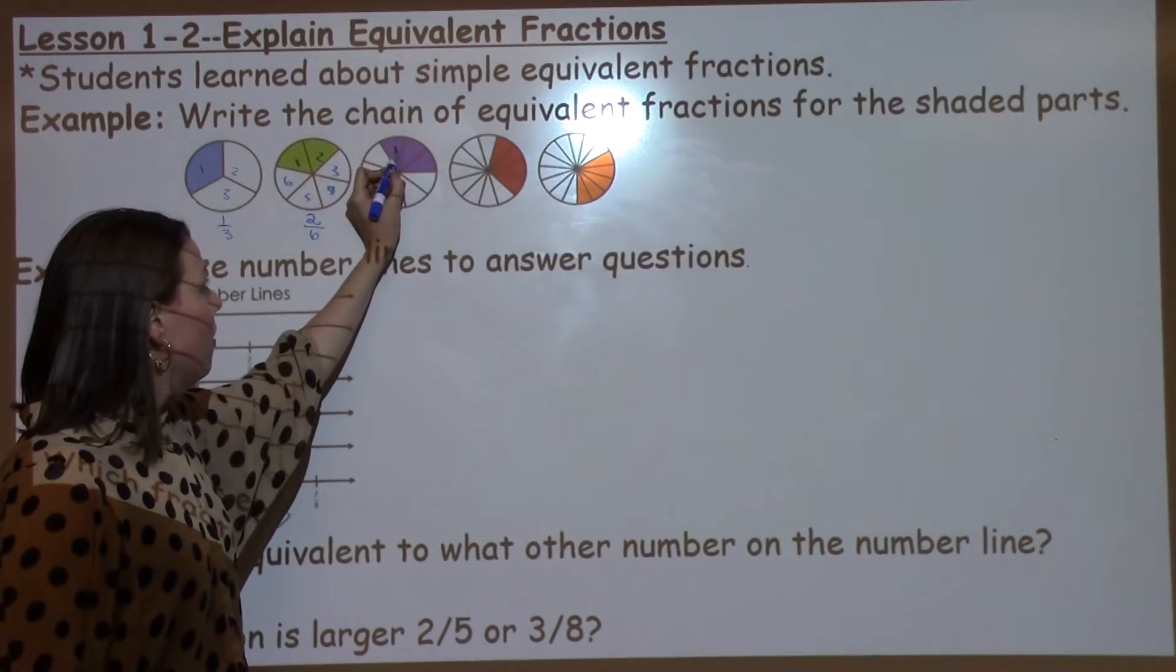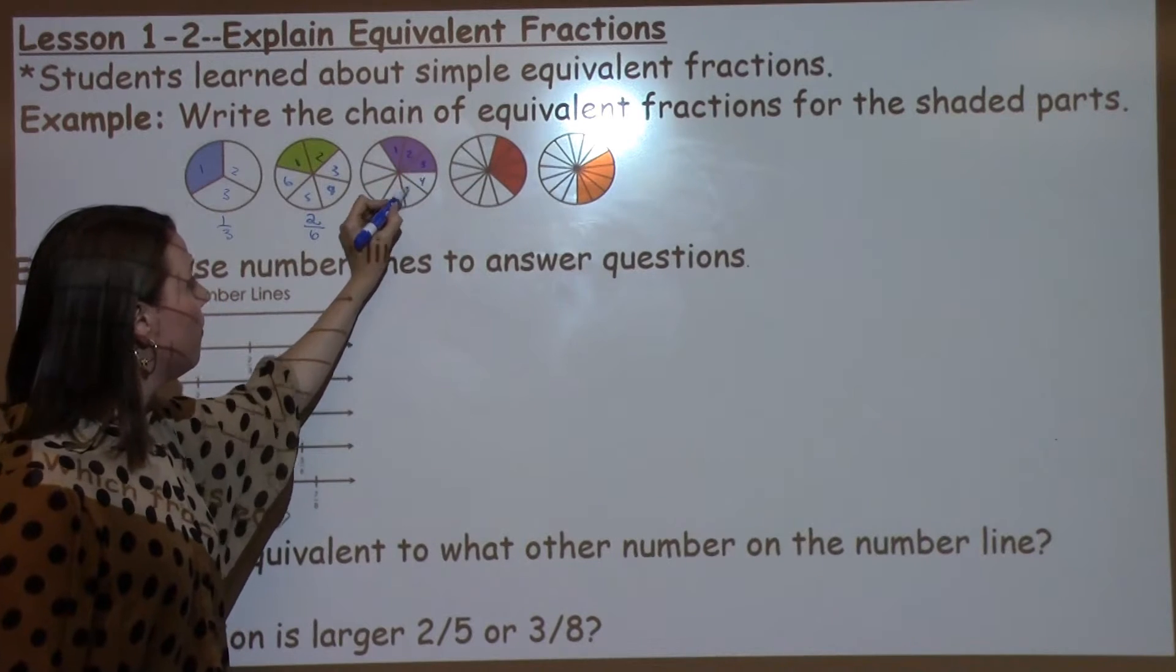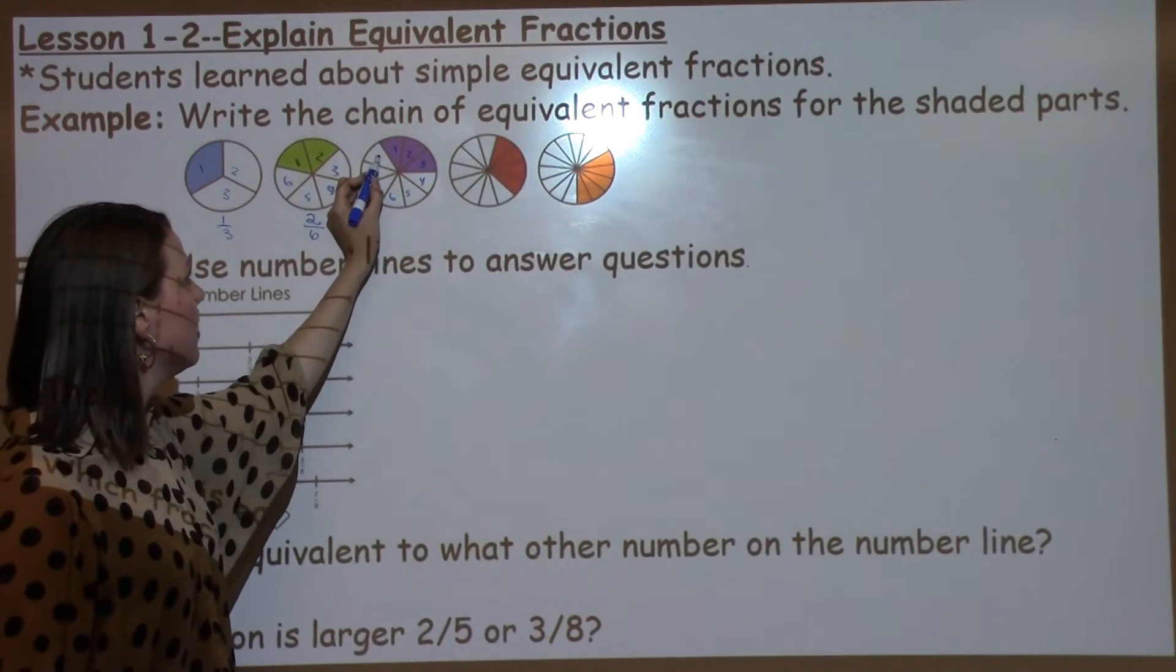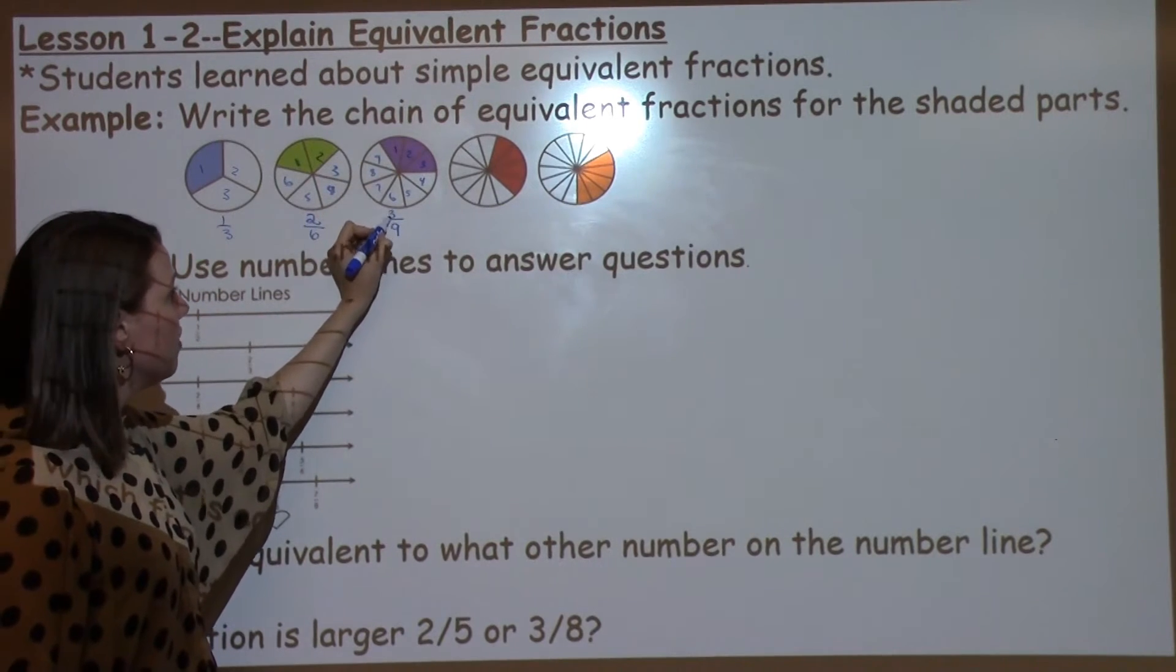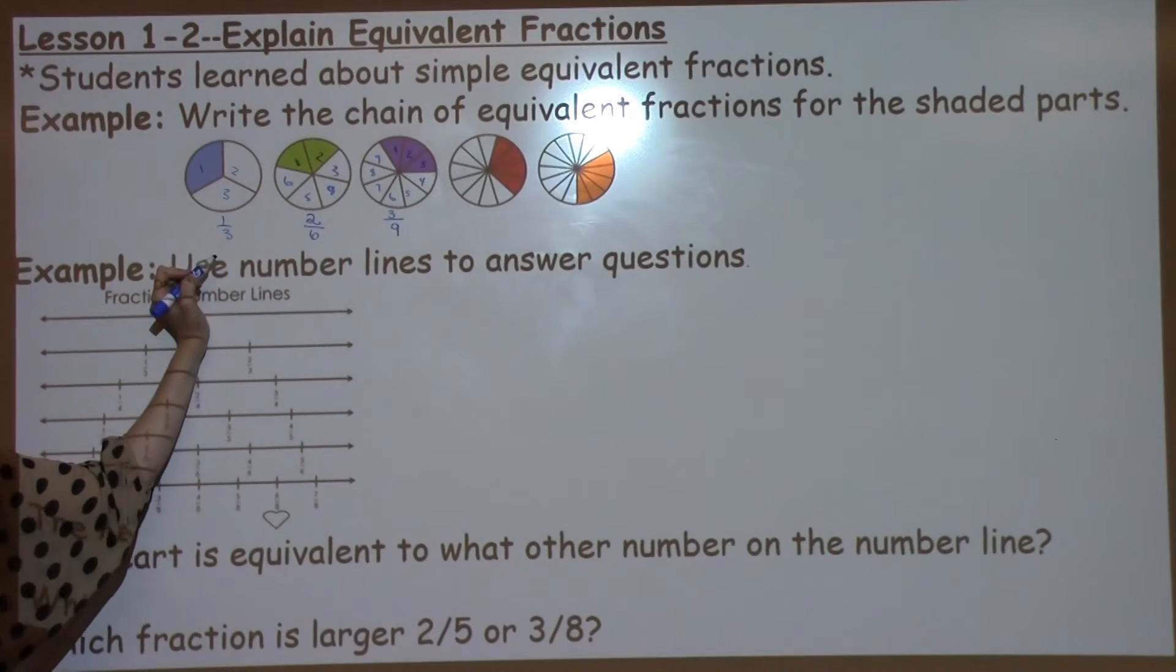Looking at my next one, I've got 1, 2, 3, 4, 5, 6, 7, 8, 9. 9 is my denominator. I've got 3 of them shaded. So now I know that 3 ninths is equivalent to 2 sixths and 1 third.